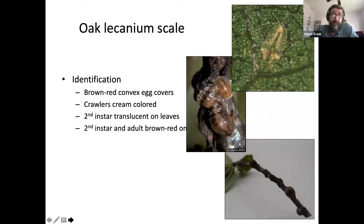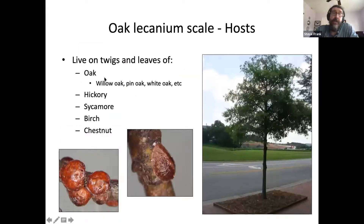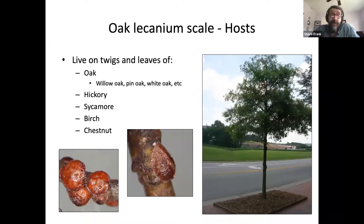One scale we've studied quite a bit in the lab is oak lecanium scale. It's brownish to red; the egg cases are big, convex covers — these are the adult females — and the nymphs that feed on the leaves are very small and translucent. Right now, we've got overwintering late-star nymphs that will develop in spring and produce eggs in early summer. There are 2,000 to 3,000 eggs in each one of these ovisacs and the crawlers feed on the leaves in spring and summer. Hosts include oak, hickory, sycamore, and birch. There's also a related scale called European fruit lecanium which is almost indistinguishable and feeds on a much wider variety of hosts, including red buds and dogwoods.